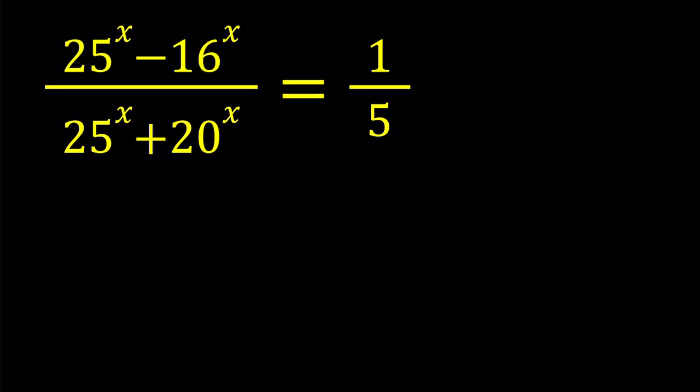First of all, note that the prime factorization of these numbers contain 2's and 5's. So we're going to use that as an excuse for our substitution. Let's set 2 to the power x equals a and 5 to the power x equals b.